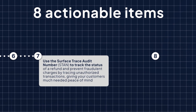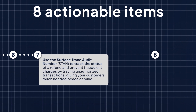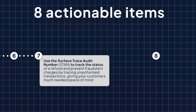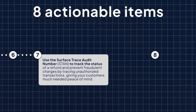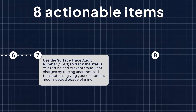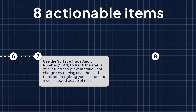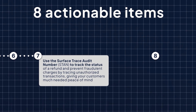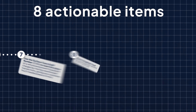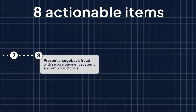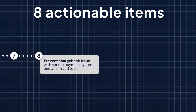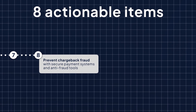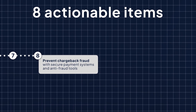Number seven: use a service trace audit number (STAN) to track the status of a refund and prevent fraudulent charges by tracing unauthorized transactions, giving your customers much-needed peace of mind. And number eight: prevent chargeback fraud with secure payment systems and anti-fraud tools.